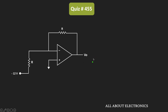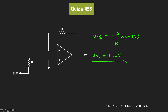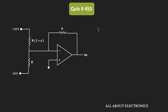In this configuration, let's say the output voltage is Vo2. That equals minus R divided by R times minus 12V, which gives plus 12V. So Vo2 equals plus 12V. To summarize: Vo1 equals minus 12 divided by (1 plus X), while Vo2 equals plus 12V.